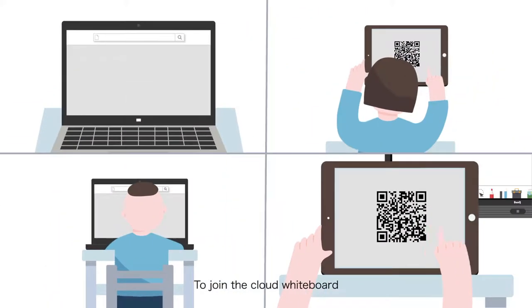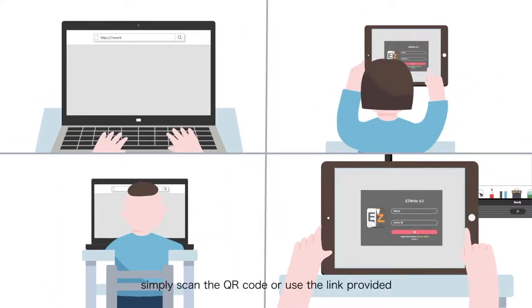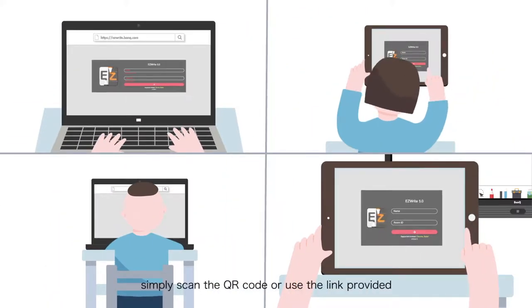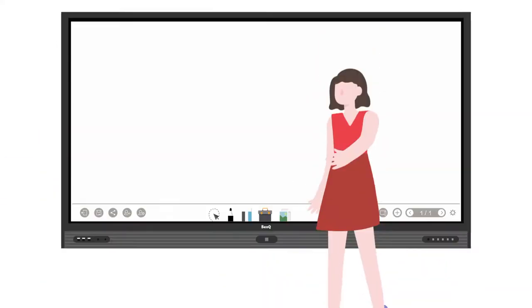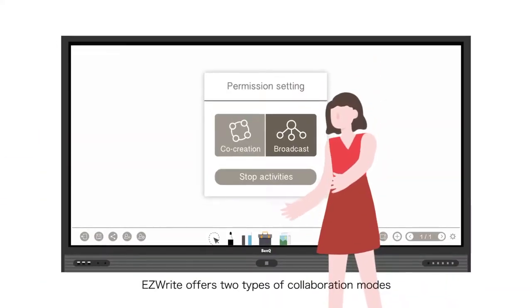To join the cloud whiteboard, simply scan the QR code or use the link provided. EasyWrite offers two types of collaboration modes.